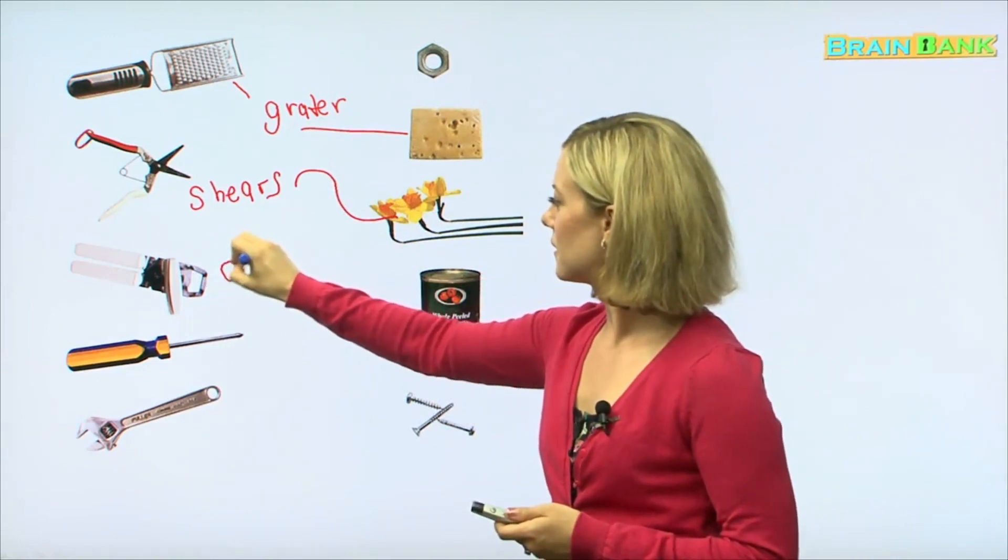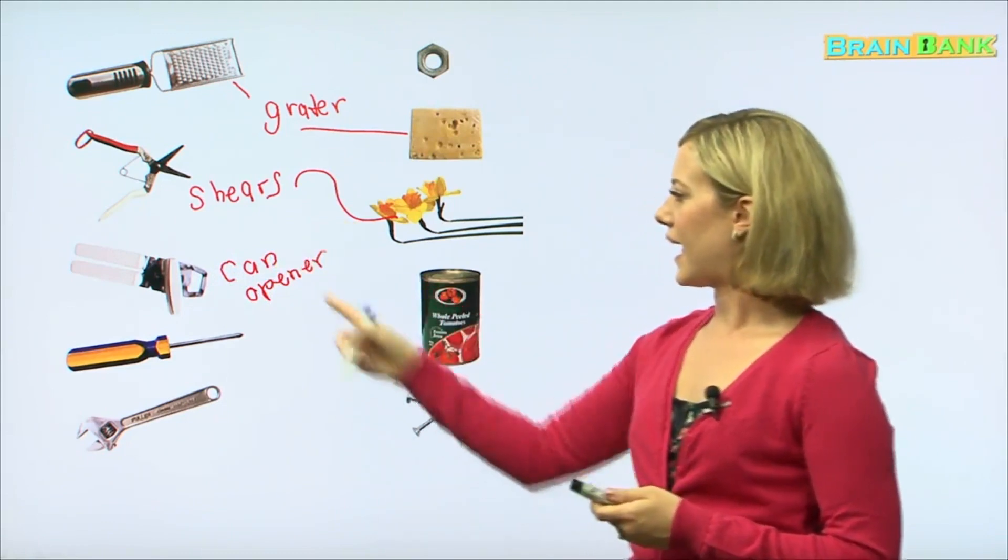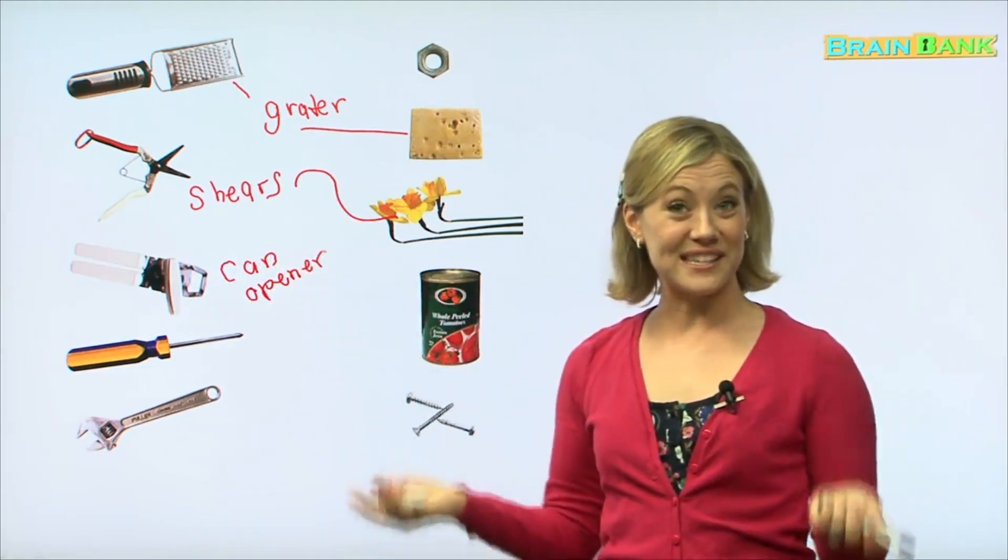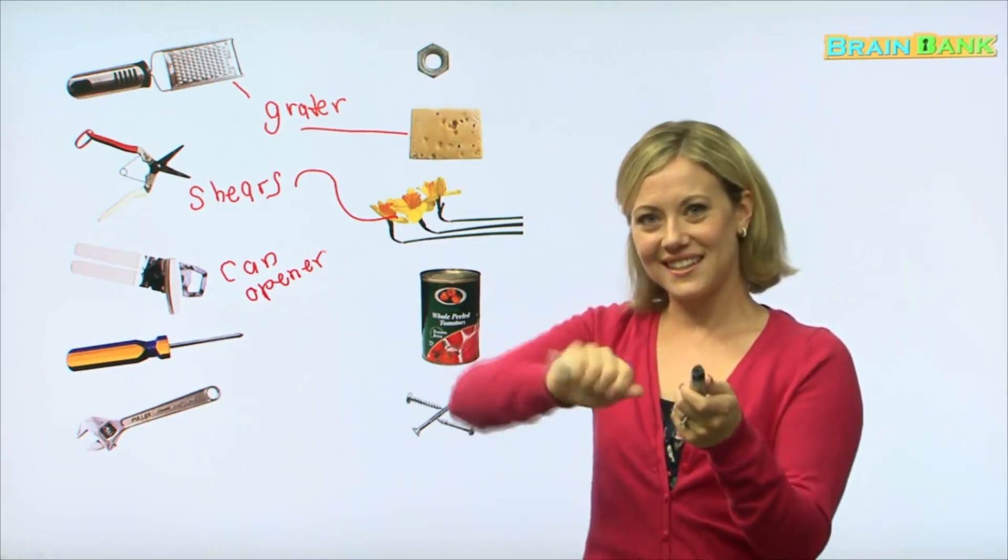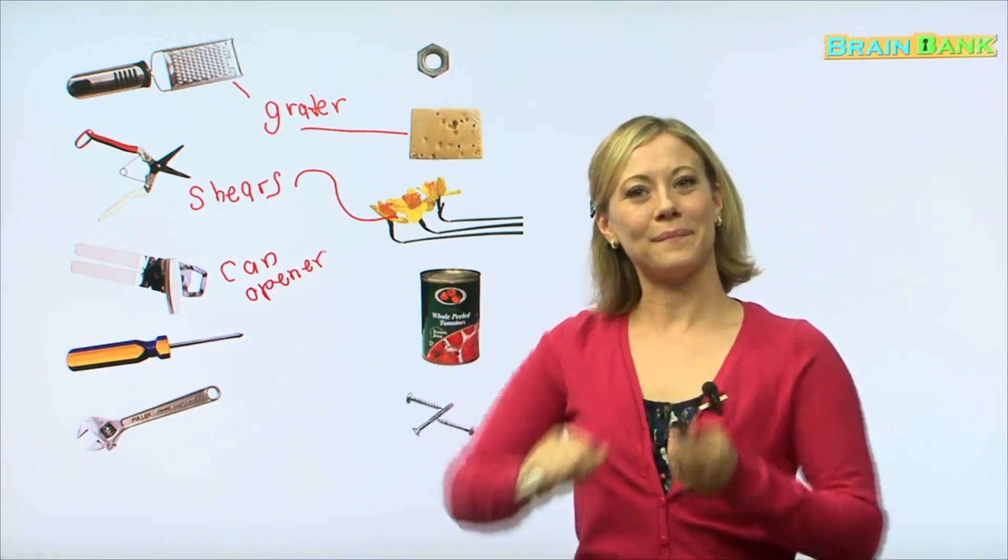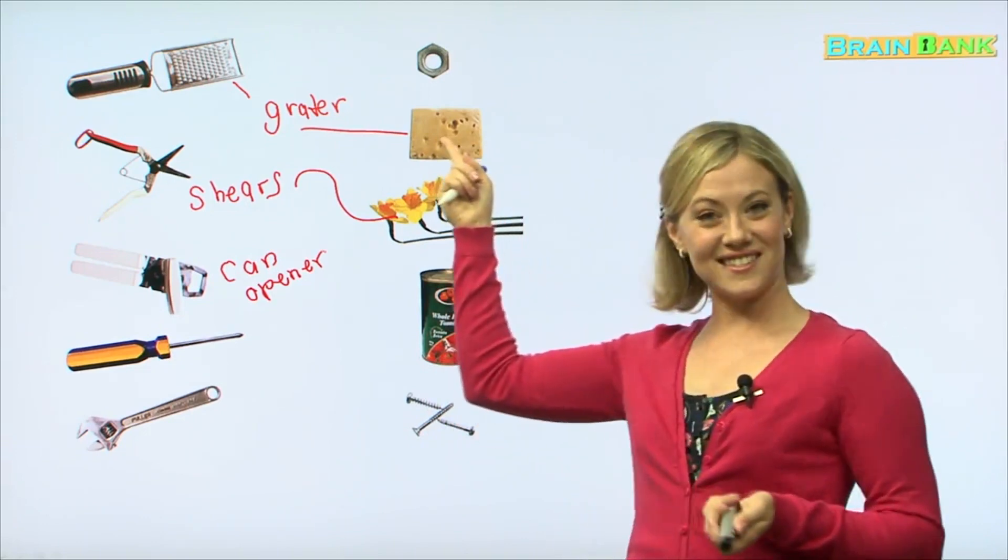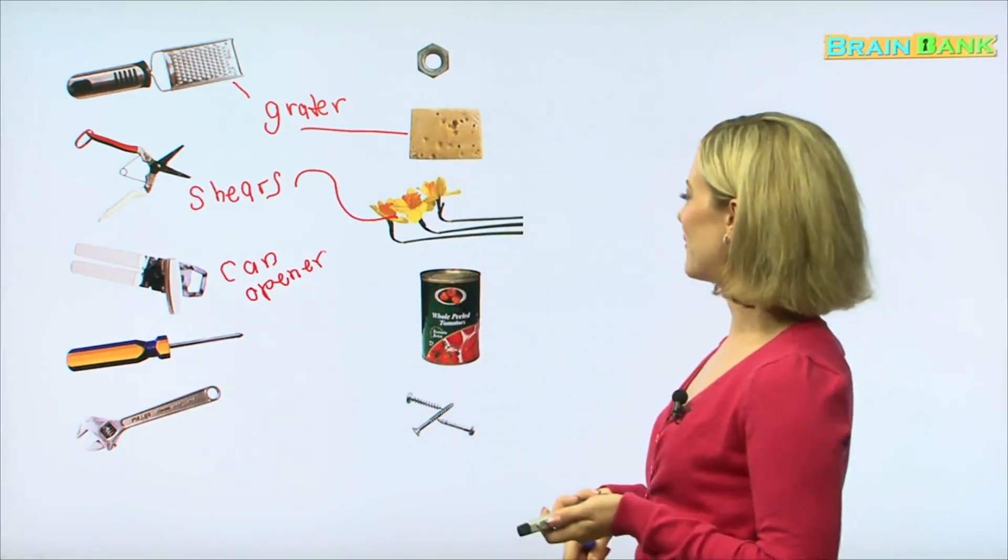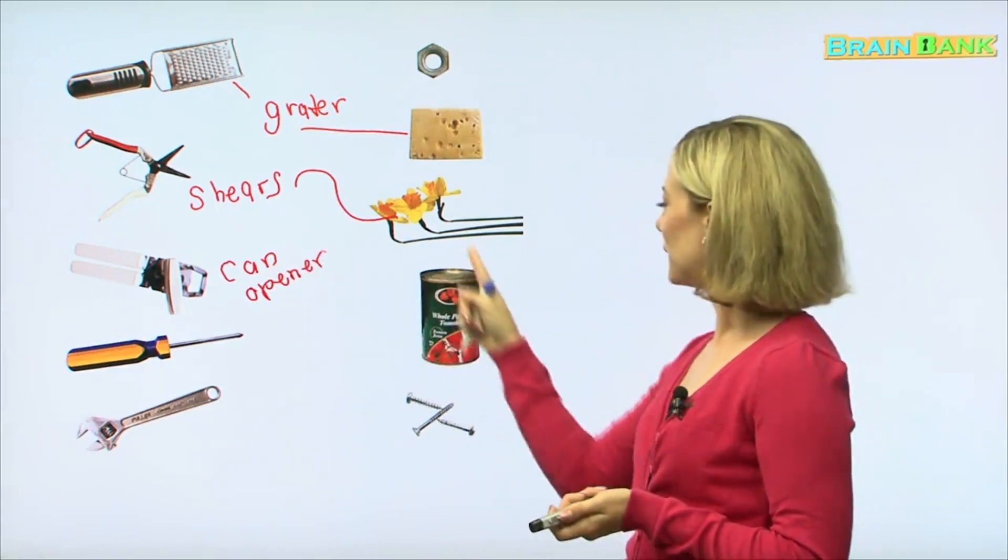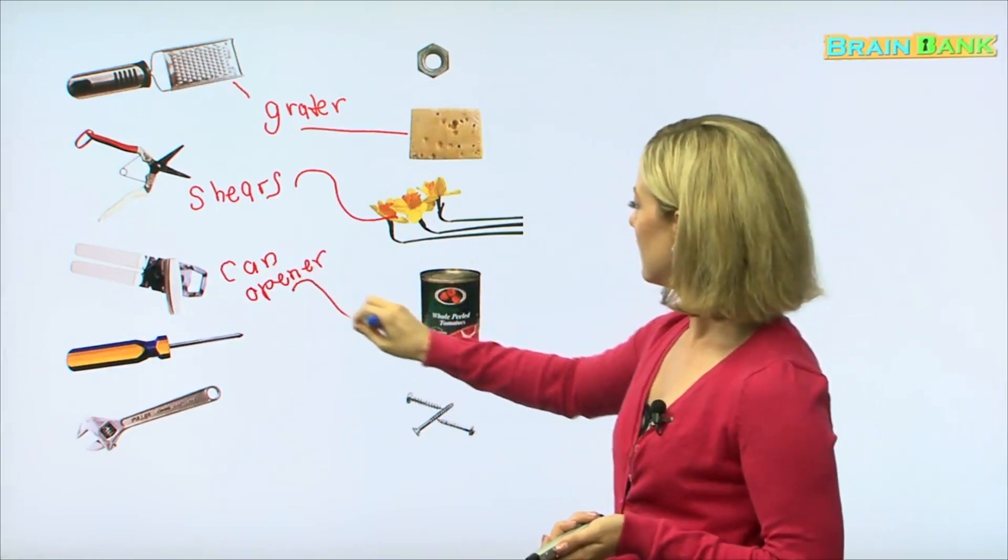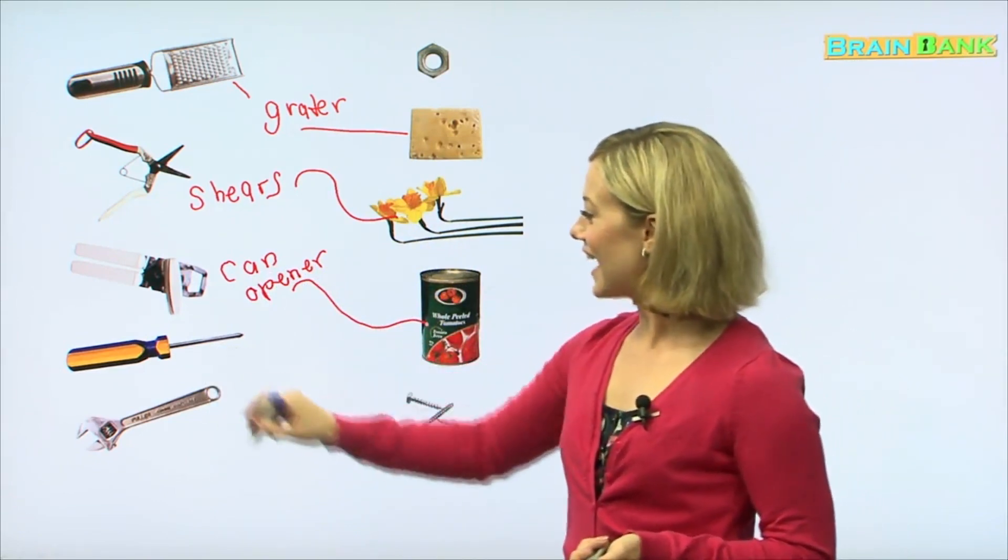Okay, next we have, can you tell what this one is? A can opener. And maybe you've seen your mom or dad use it in the kitchen. You hold it, you put something in and you twist and then it opens it up. So what do we need to open over here? The cheese? No. Ah, the can of tomatoes! Can opener, can. That's a simple one.